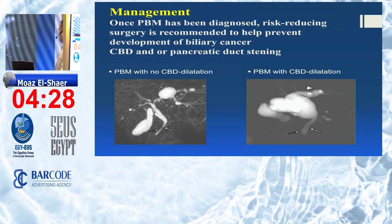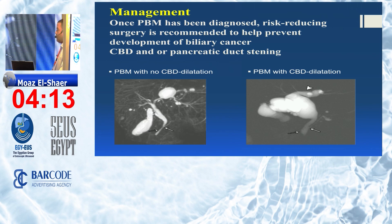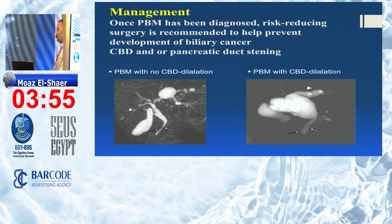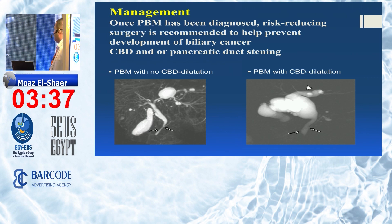The other possibility is pancreatobiliary maljunction with marked dilatation of the bile duct. In such cases, we need to detect the level of dysplasia — the level of irritation of the bile duct by bile. These patients usually need prophylactic cholecystectomy plus bile duct resection up to the level of dysplasia. We perform cholangioscopy with random biopsy from the bile duct wall to detect the level of dysplasia, and then perform bile duct resection in addition to cholecystectomy to prevent bile duct cancer.